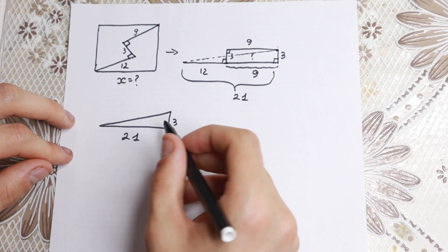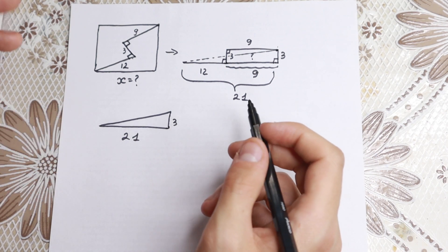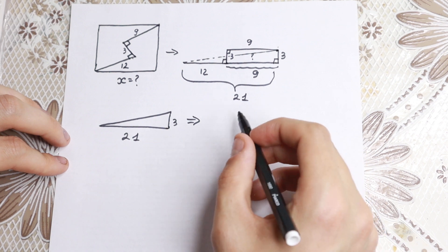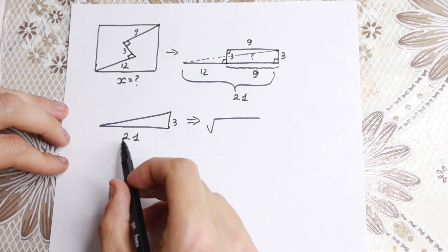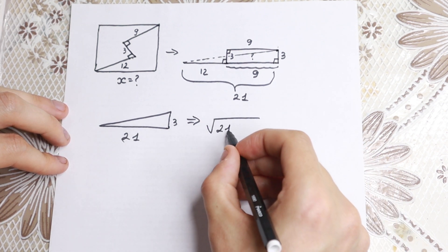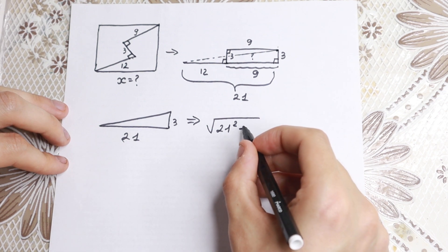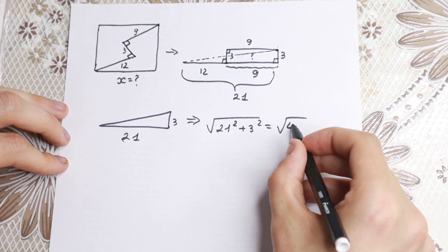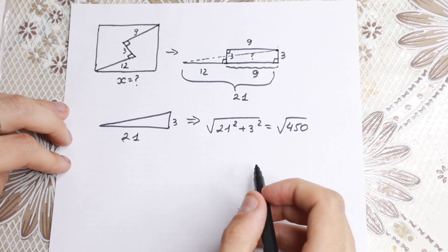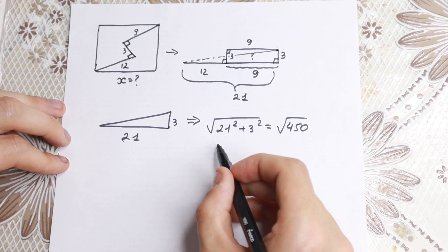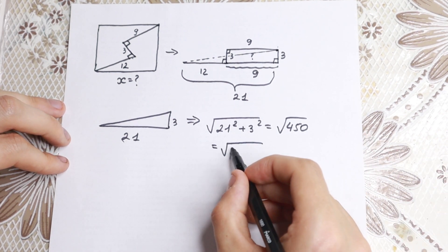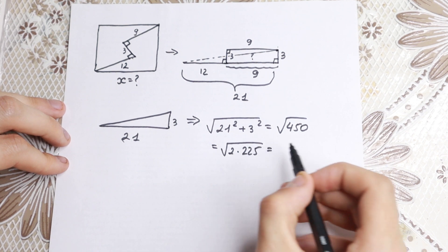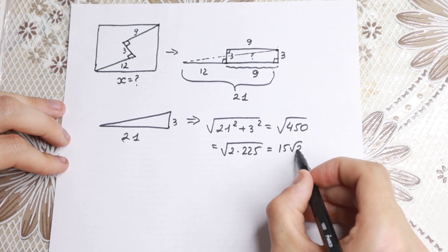As you can see, this is a classic Pythagorean theorem case, because we can easily find it using this theorem. The diagonal is equal to the square root of 21 squared plus 3 squared, which equals the square root of 450. We can simplify this as the square root of 2 times 225, which equals 15√2.